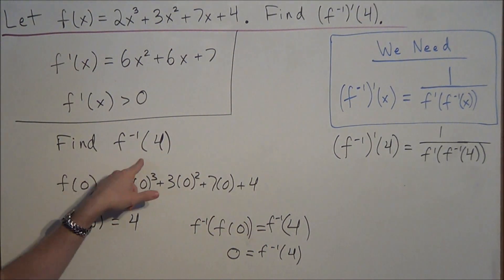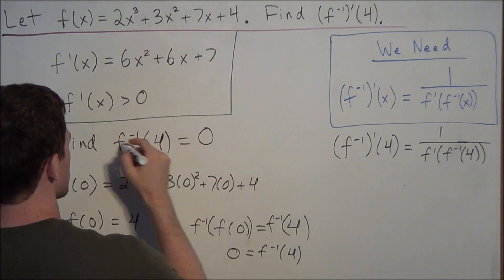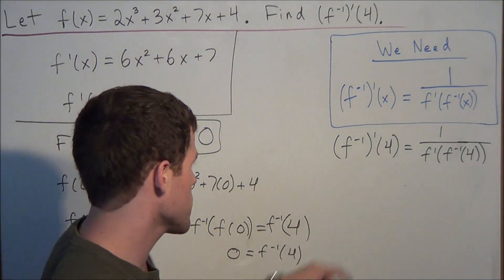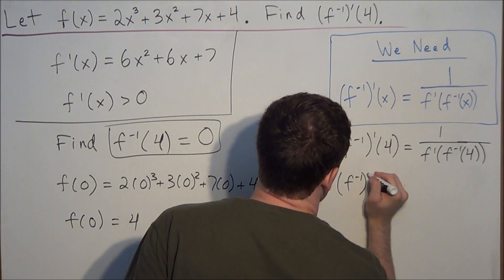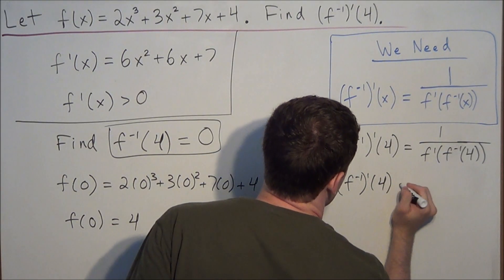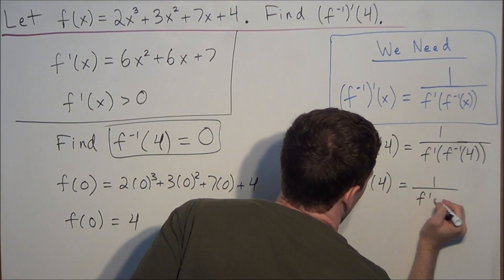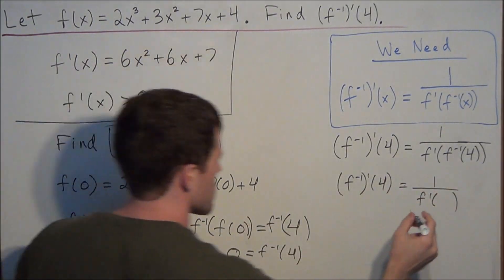So at this part here, we're trying to find f inverse at 4, which is simply equal to 0. So now we have enough information to go ahead and solve this problem. So if we're calculating the derivative of the inverse at 4, this is equal to 1 over f prime evaluated at, and now we can replace f inverse of 4 with 0.